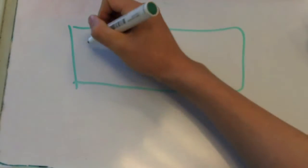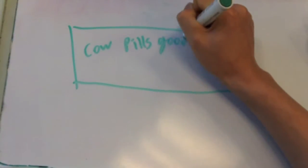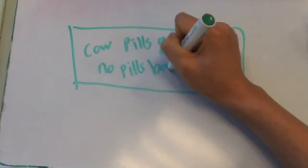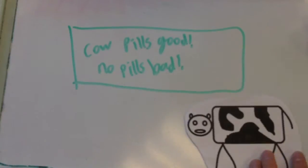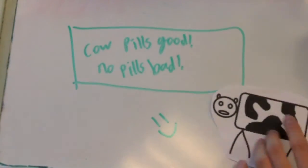Also, the government could promote these pills by setting up advertisements. Cow pills good, no pills bad. This would shift the MSB outwards.